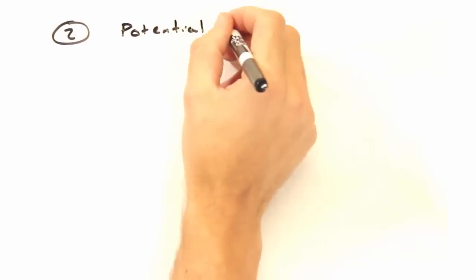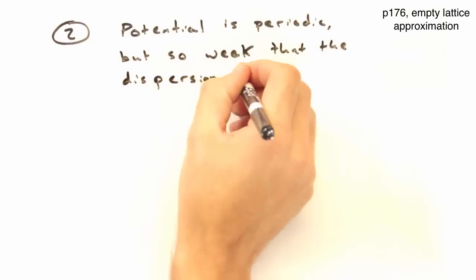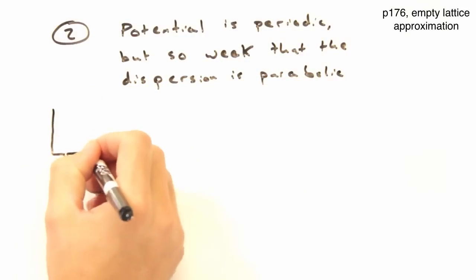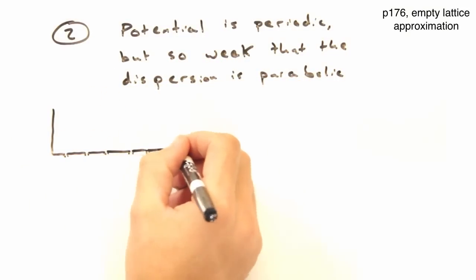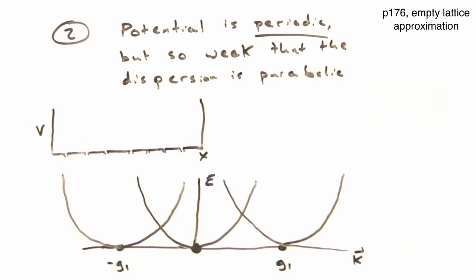Second, if we think about our weak potential as so weak that it's vanishing, we can estimate our potential as a flat box, and we know that dispersion is basically parabolic. But since we're still invoking periodic conditions, we get parabolas that repeat at k plus g, k minus g, and so on.